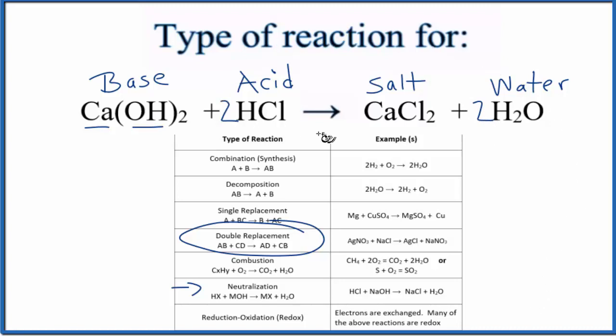So this is the type of reaction for Ca(OH)₂ plus HCl. It's both a neutralization and a double displacement reaction.